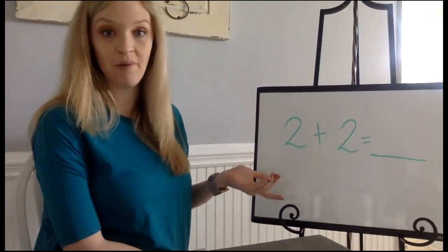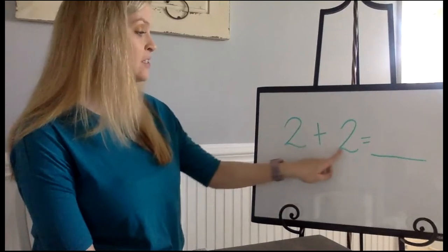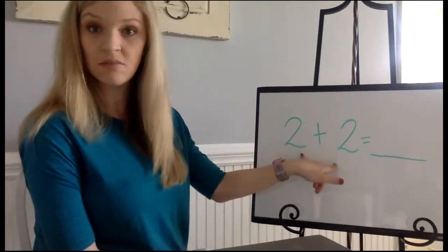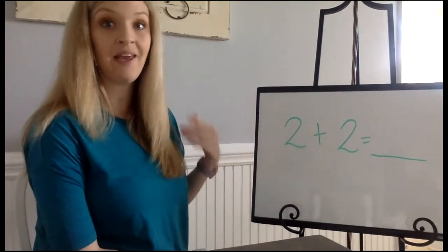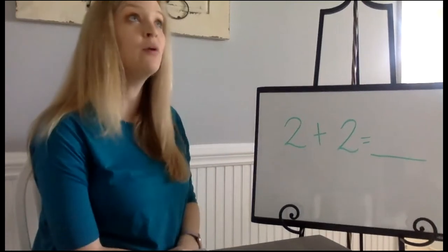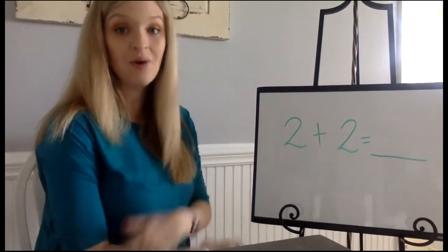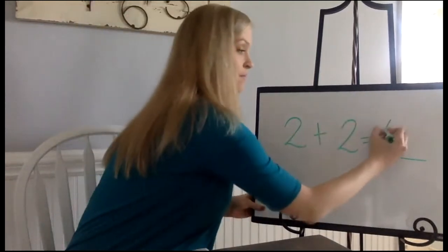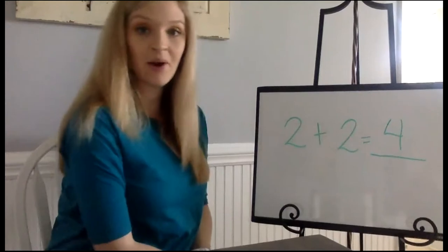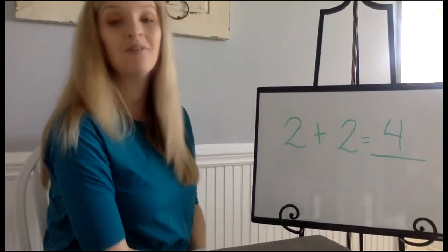So I'm going to find our bigger number first. 2 + 2. Well, those are equal. So I'm just going to start at two and I'm going to count up two. So I'm going to go two, three, four. So what is 2 + 2 equal? Four. How many birds are sitting in the tree? Four birds.